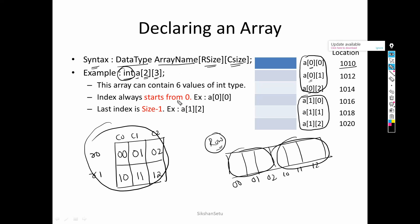Array index always starts from zero, so row zero column zero. You can see this is a of zero zero. It should be size minus one — row size is two so two minus one is one; column size is three so three minus one is two. The last element will be represented as a one two, and here we can see it is a one two. This is how we declare an array.